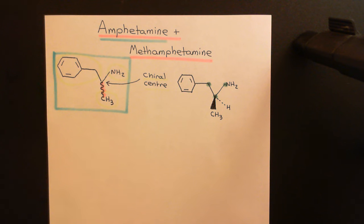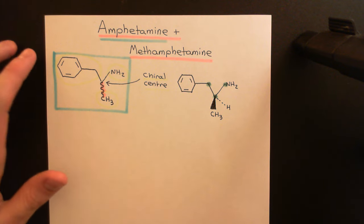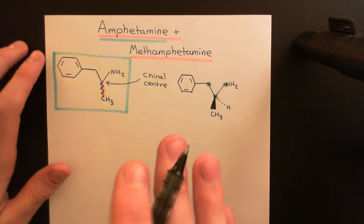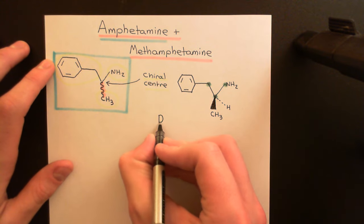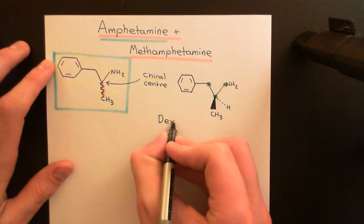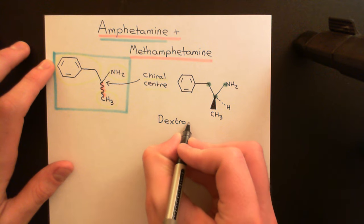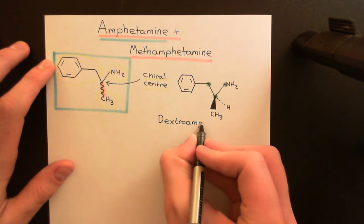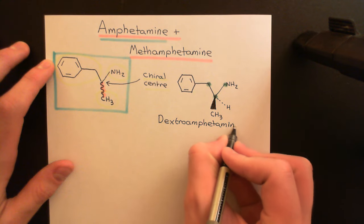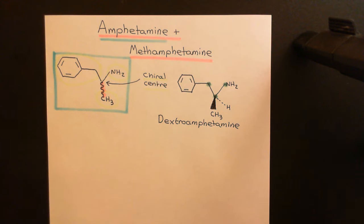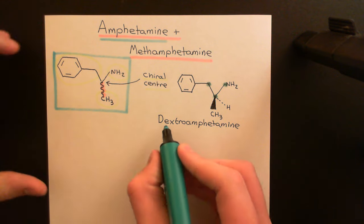Here is a specific optical isomer of the amphetamine molecule, and it has a name you'll probably recognise — it is called D-amphetamine or dextroamphetamine. So when people talk about dextroamphetamine, they are just talking about a specific optical isomer of the amphetamine molecule.